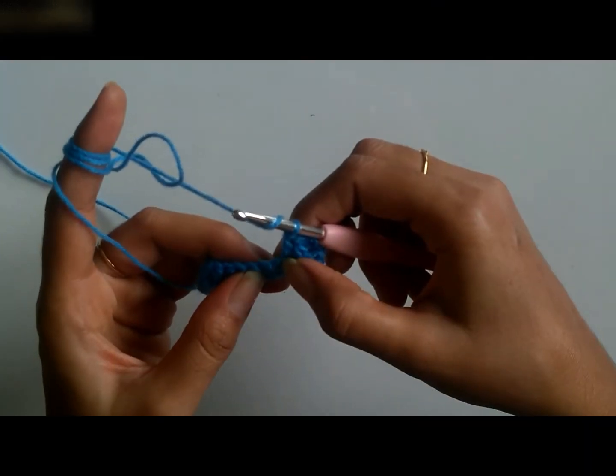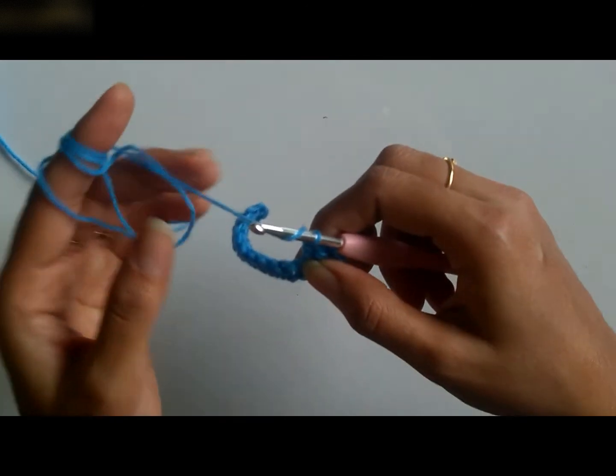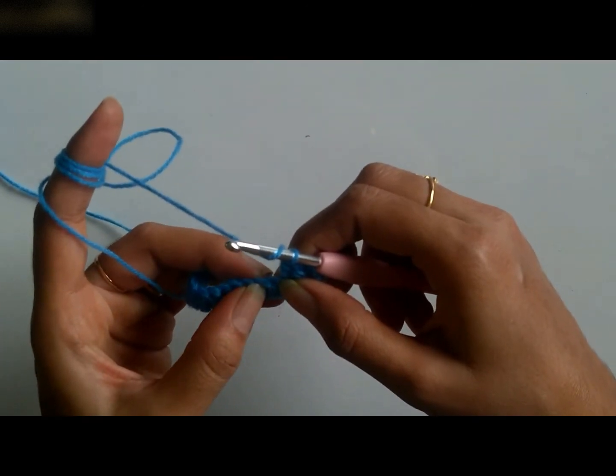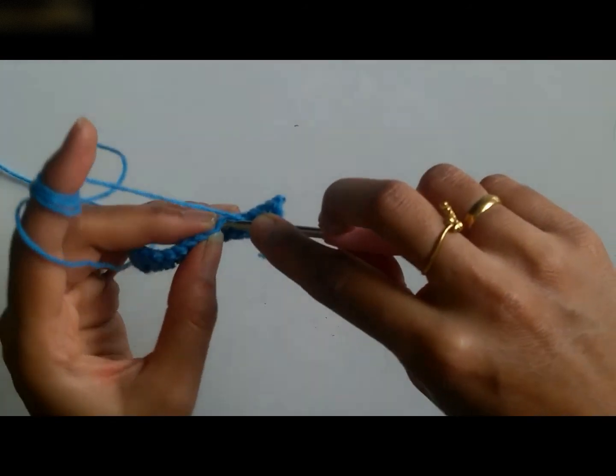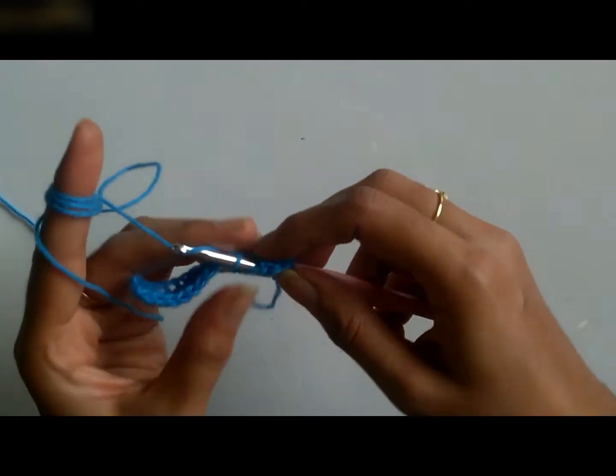Now I will skip one stitch and work a V-stitch into the next stitch. So just watch out carefully. For the V-stitch I shall initially make one double crochet.